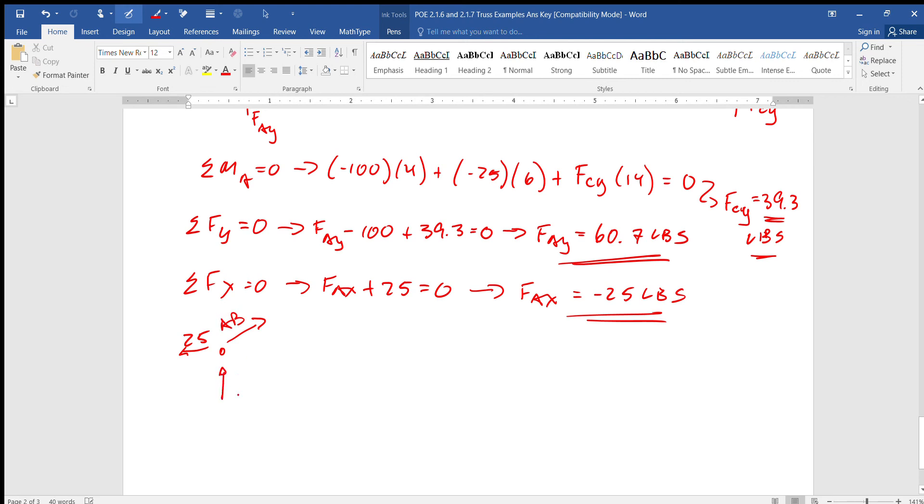AB. Here we have 60.7, here we have AD. This is point A. Sum of the y's has to equal zero, so we get 60.7 plus AB sine of 56.31.